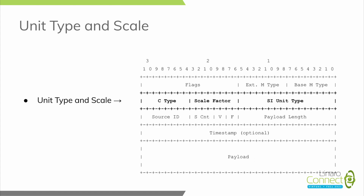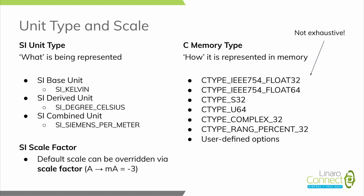The next word is the unit type and scale. This is where we represent the SI unit type, which is a 16-bit value; the scale factor, which is an optional 8-bit value that allows you to shift the default SI unit scale up or down; and the C type, which is how that SI unit is represented in memory.